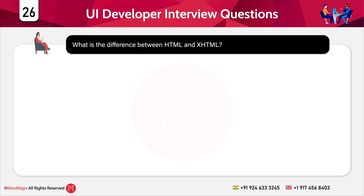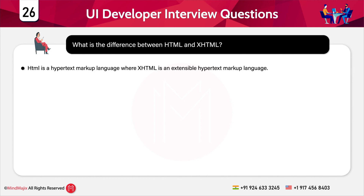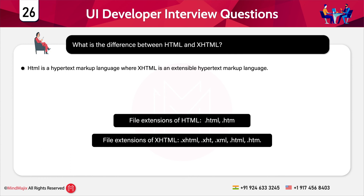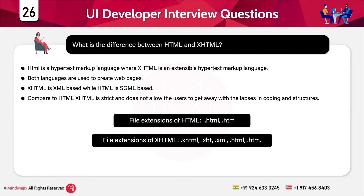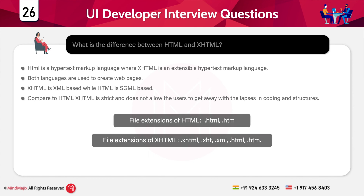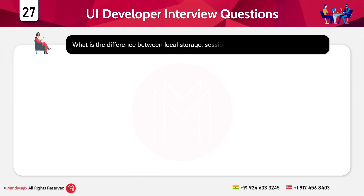The next question is: what is the difference between HTML and XHTML? HTML is HyperText Markup Language whereas XHTML is Extensible HyperText Markup Language — both are used to create web pages. XHTML is XML-based whereas HTML is SGML-based. Compared to HTML, XHTML is stricter and does not allow users to get away with lapses in coding and structure.